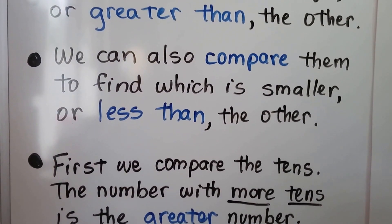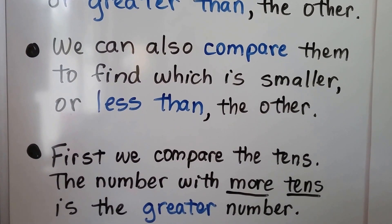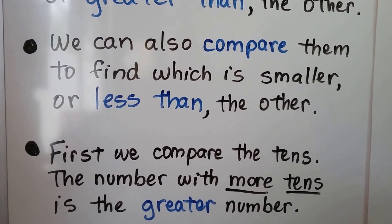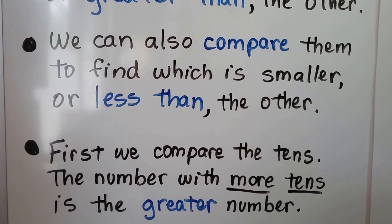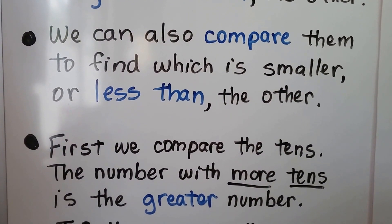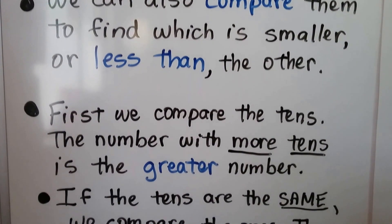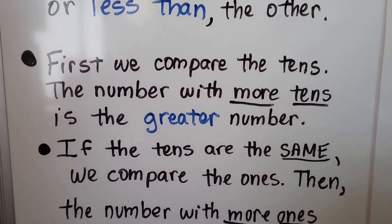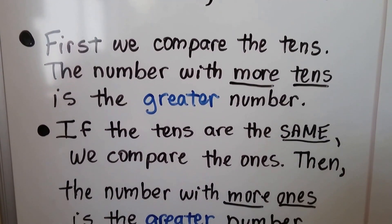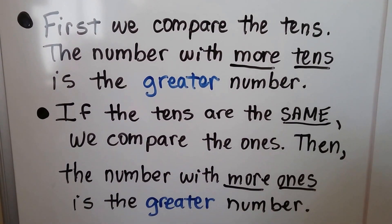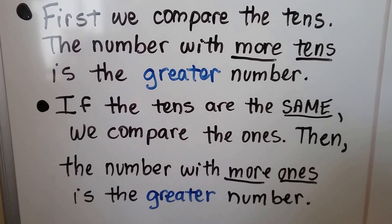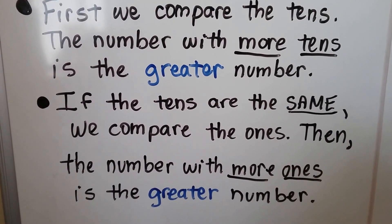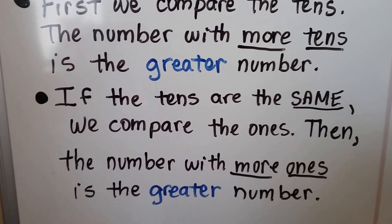First, we compare the tens. The number with more tens is the greater number. If the tens are the same, we compare the ones. Then the number with more ones is the greater number.